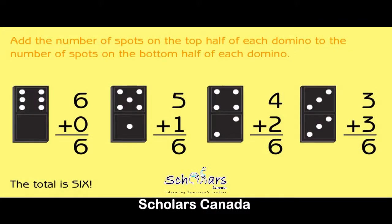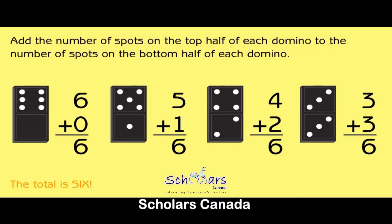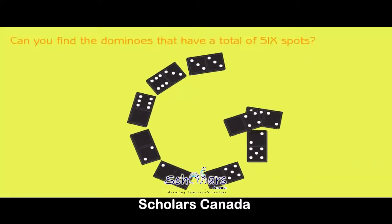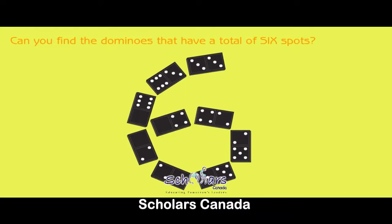Add the number of spots on the top half of each domino to the number of spots on the bottom half. The total is six. Six plus zero equals six. Five plus one equals six. Four plus two equals six. Three plus three equals six. Can you find the dominoes that have a total of six spots?